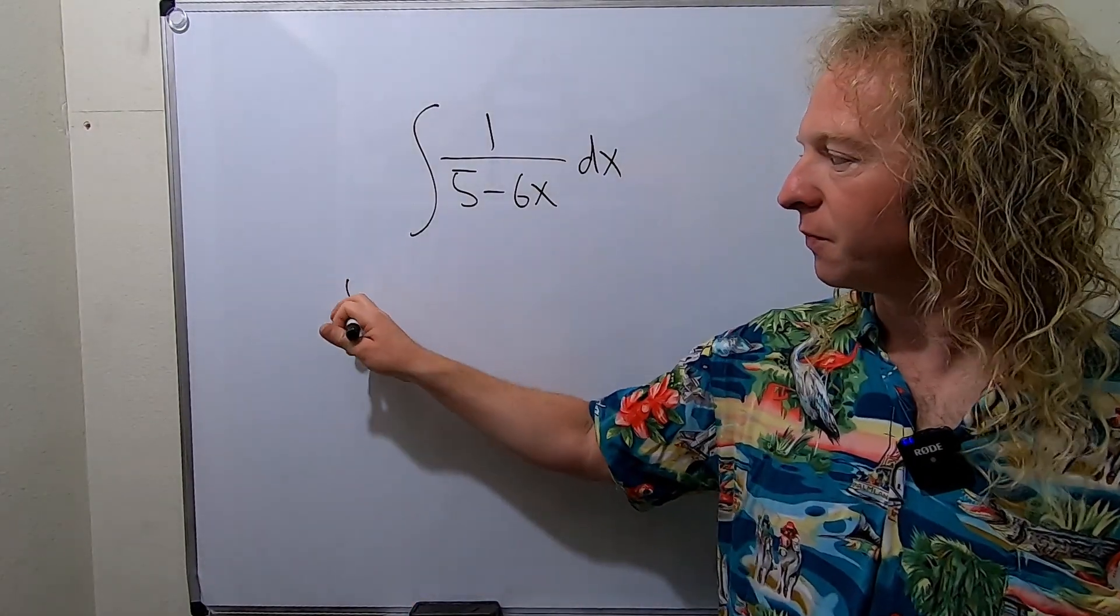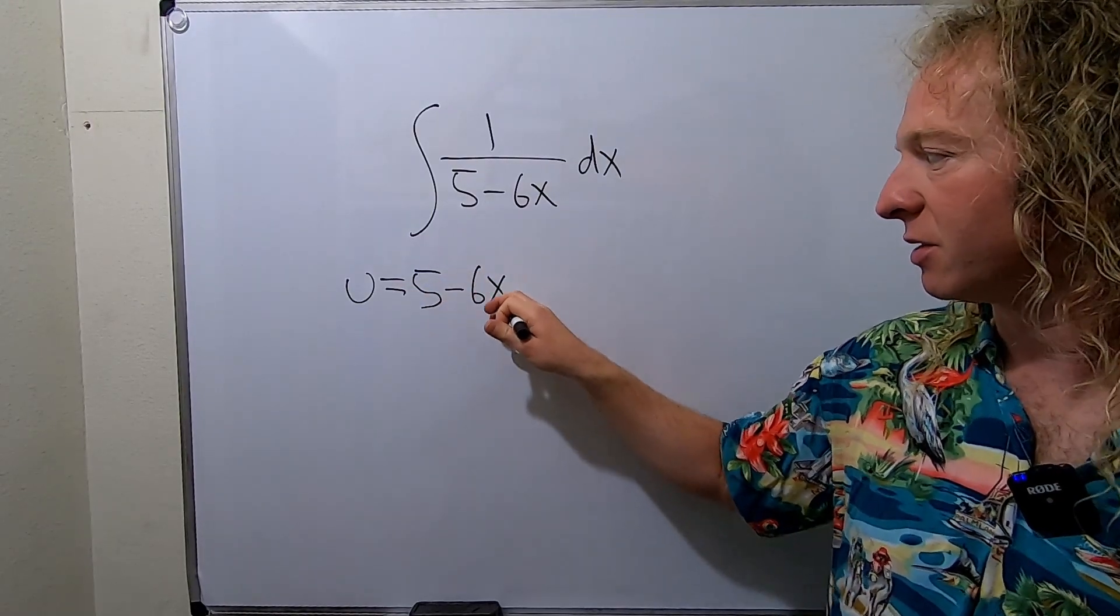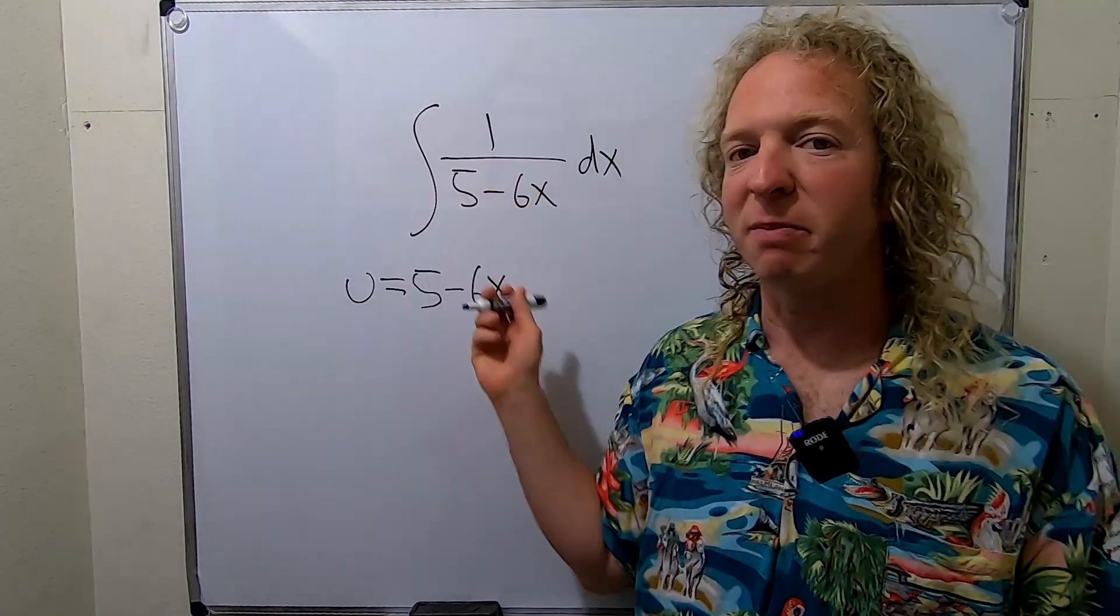So we'll let u equal to 5 minus 6 times x. So that's the first step is you make the bottom piece u.